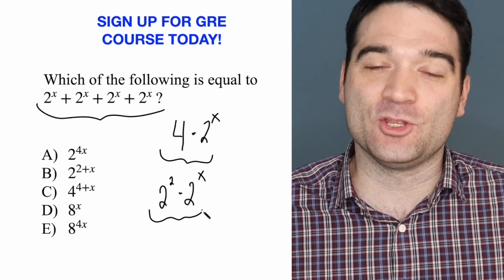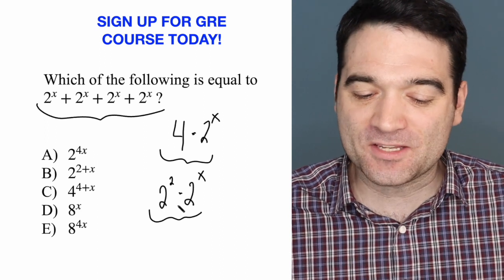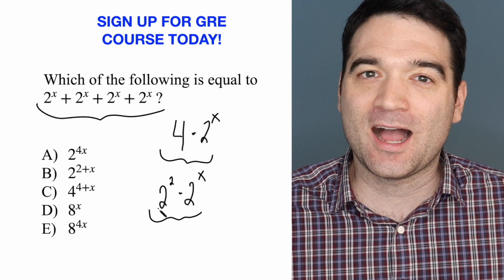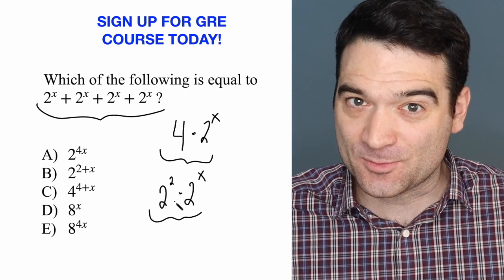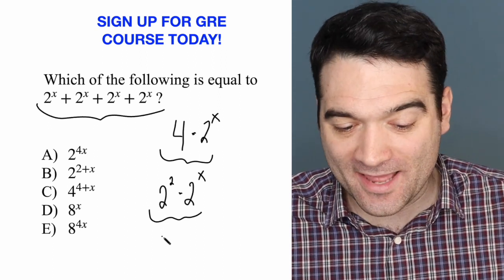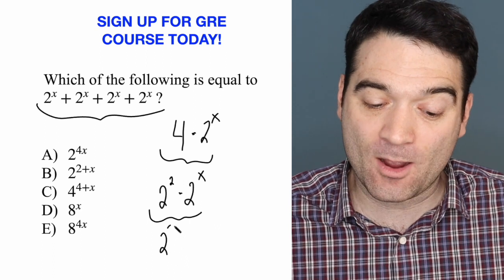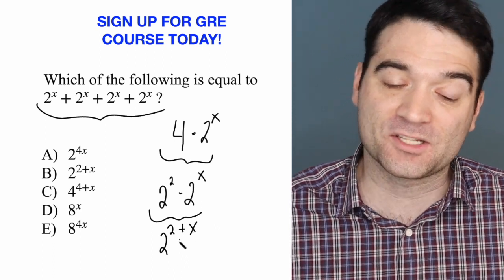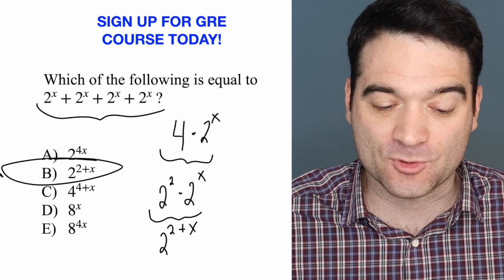Now I can use my exponent rules. If I have the same base and I multiply these terms together, I'm going to add the exponents, right? So I get 2 to the power of 2 plus x, which is answer option b.